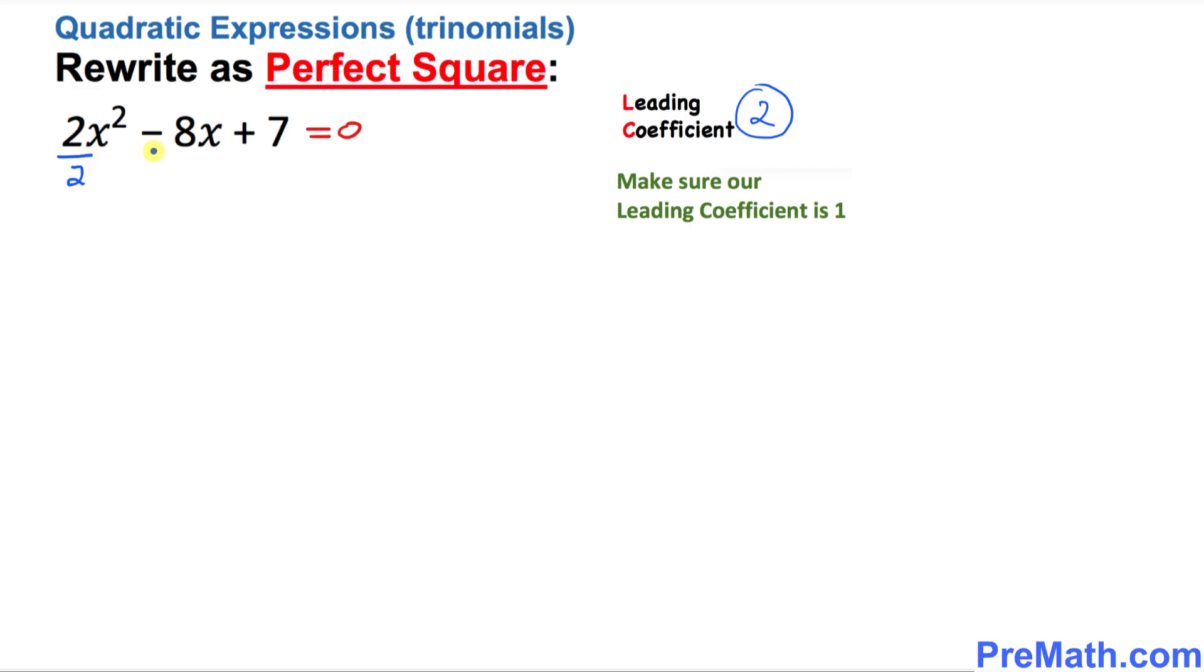If you divide this term by 2, you must divide by 2 across the board, each and every term. So this is simply going to become x² - 4x + 7/2 = 0.